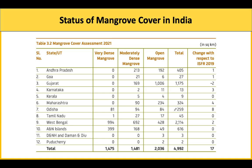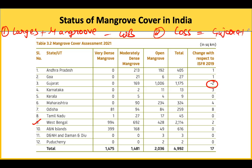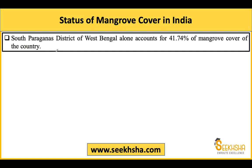Mangrove cover India mein state-wise dekhen to sabse zyada mangrove cover West Bengal ke andar milta hai. Gain mein sabse zyada Odisha ke andar hua hai. Loss ke liye ek point note karo: sabse zyada loss Gujarat mein hua hai. West Bengal ki South 24 Parganas district sabse rich hai mangroves mein - Hindustan ka 41.74 percent mangrove cover sirf is ek district ke andar hai. Yeh bhi aapne yaad rakhna hai.